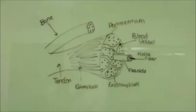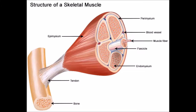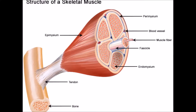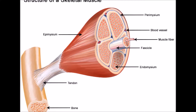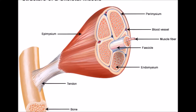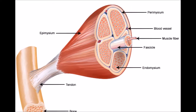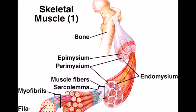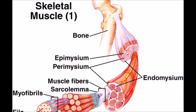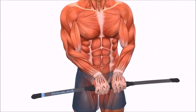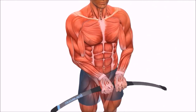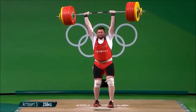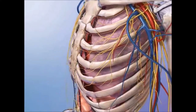Each muscle is surrounded by a connective tissue sheath called the epimysium. Fascia, connective tissue outside the epimysium, surrounds and separates the muscles. Portions of the epimysium project inward to divide the muscle into compartments. Each compartment contains a bundle of muscle fibers called the fasciculus, surrounded by a layer of connective tissue called the perimysium. Within the fasciculus, each individual muscle cell, called the muscle fiber, is surrounded by connective tissue called the endomysium. The connective tissue coverings furnish support and protection for the delicate cells and allow them to withstand the forces of contraction, and also provide pathways for the passage of blood vessels and nerves.